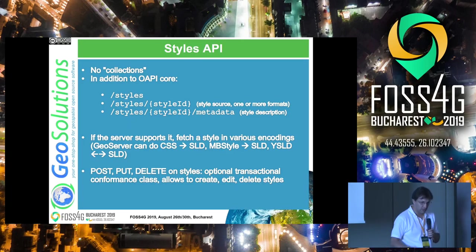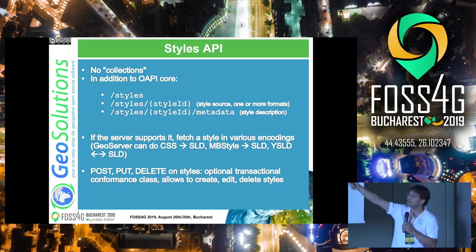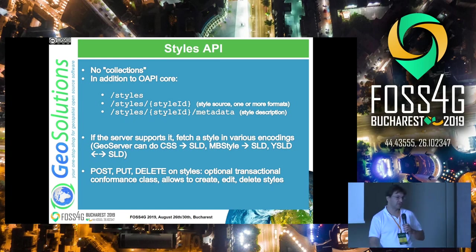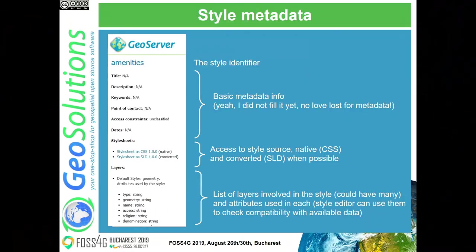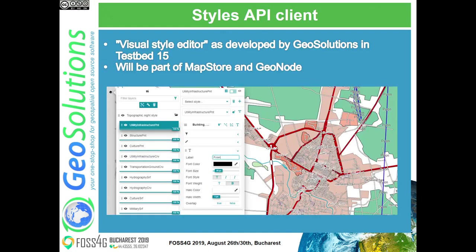A brief introduction to the Styles and Tiles API. Styles are collections of styles — each style has metadata and can be extracted in one or more formats. Some servers implement only one format; others have a built-in engine to convert between formats. For a single style you can see the list of layers in the style, and for each layer it tells you what attributes the style uses so you can tell if your dataset is compatible. We are making a styles API client — a visual style editor — as one objective of Testbed 15. It uses Mapbox vector tiles for rendering, and you can point and click to edit the style and save it back to the server.